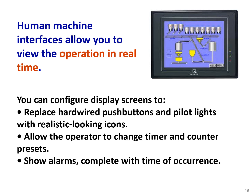Human machine interfaces allow you to monitor the operation in real time — you can see the visualization and observe what's going on online and in real time inside the process. You can configure display screens to replace hardwired push buttons and pilot lights with realistic-looking icons, allow the operator to change timer and counter presets, and show alarms complete with the time of occurrence.